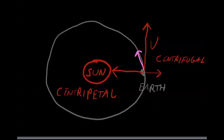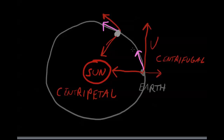This keeps continually going on and on. The velocity wants to take the planet in one direction, centripetal force is pulling in toward the center, and the resultant force gives it the orbital direction. This is what is constantly happening with the orbit of any planet around the sun — this also holds true for comets, anything that's orbiting the sun. Velocity wants to keep it going in a straight line at a constant speed according to Newton's laws, and the resultant force brings it into its orbit.